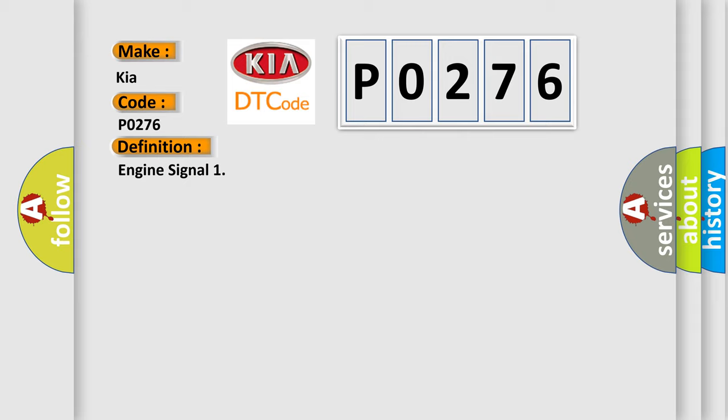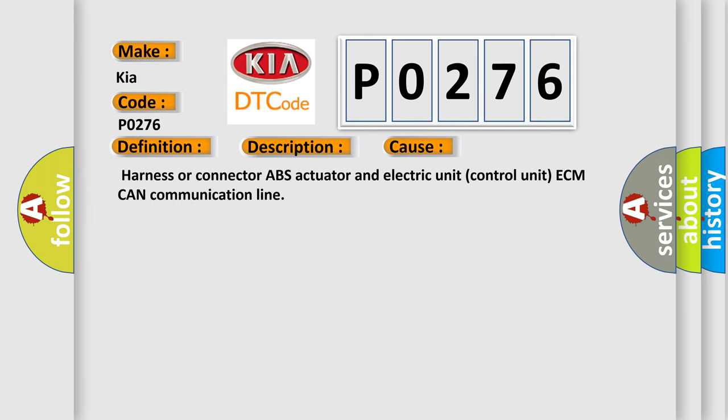And now this is a short description of this DTC code. When a malfunction is detected in the ECM system, this diagnostic error occurs most often in these cases: Harness or connector ABS actuator and electric unit control unit ECM CAN communication line.